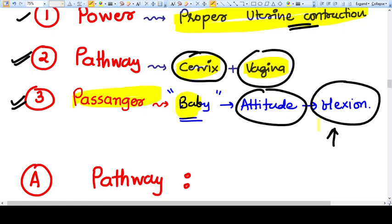When the baby is well flexed, the overall volume of the baby becomes easier to pass out from the pathway. Flexion attitude is favorable for vaginal delivery.